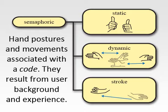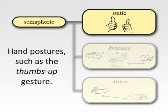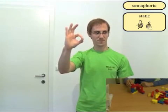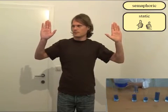Semaphoric gestures are hand postures or movements associated with specific codes, which result from the user's background. Semaphoric static gestures are hand positions such as thumbs up, ok sign, stop sign, or indicating numbers.